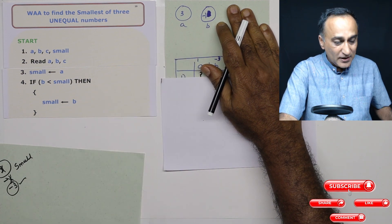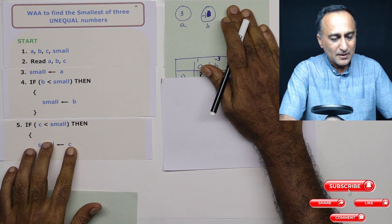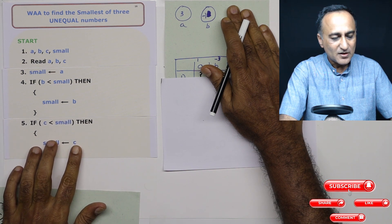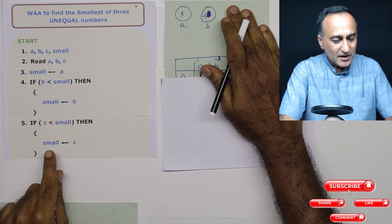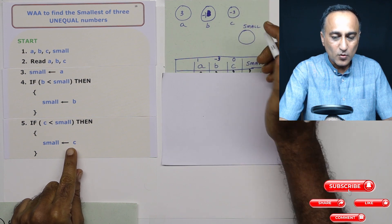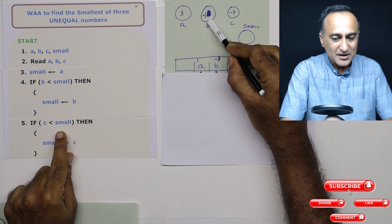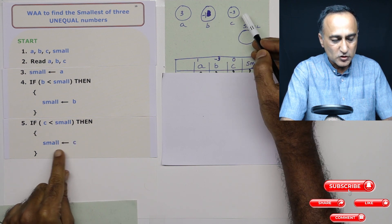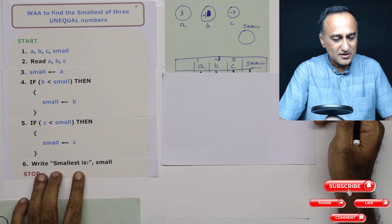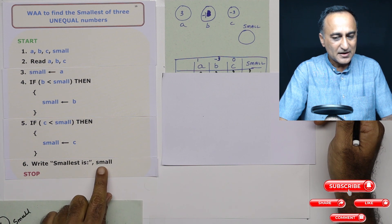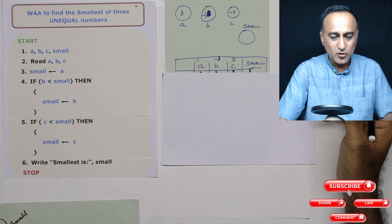Now I am only left with the value of c. So in the fifth step, I am comparing the value of c with small. If c happens to be less than small, then my new small is going to be c. Here, c is minus 3. Is minus 3 less than minus 1, which was the old value of small? It is true. So small is going to be c. And in the last step, I am simply going to write the smallest number, which is going to be minus 3. Whatever is in double quotes is going to print as is. It's going to print minus 3 and then it's going to stop.